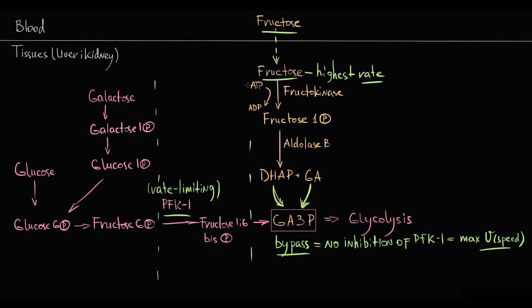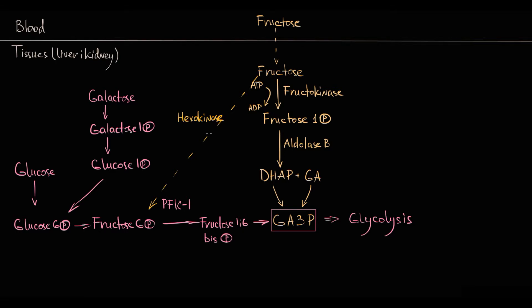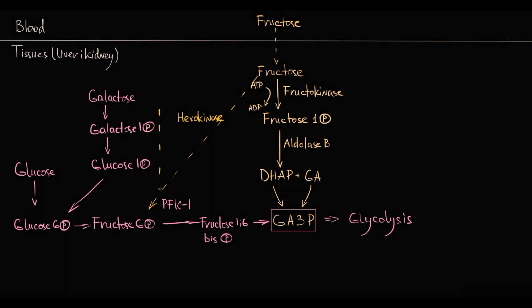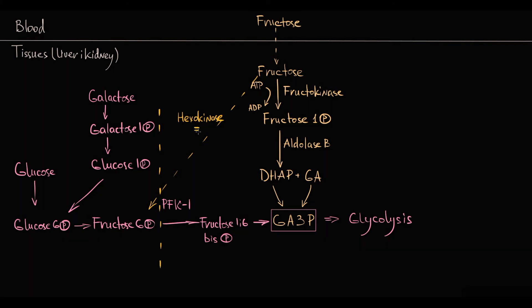As a reserve option, fructose can also be trapped by hexokinase. Hexokinase usually traps glucose, but it can also phosphorylate fructose to fructose 6-phosphate, which enters glycolysis prior to the phosphofructokinase 1 rate-limiting reaction — so this pathway is not as fast as the fructokinase pathway. Fructose 6-phosphate can also be converted to glucose 6-phosphate for use in the pentose phosphate pathway, or further converted to glucose 1-phosphate for glycogen synthesis.